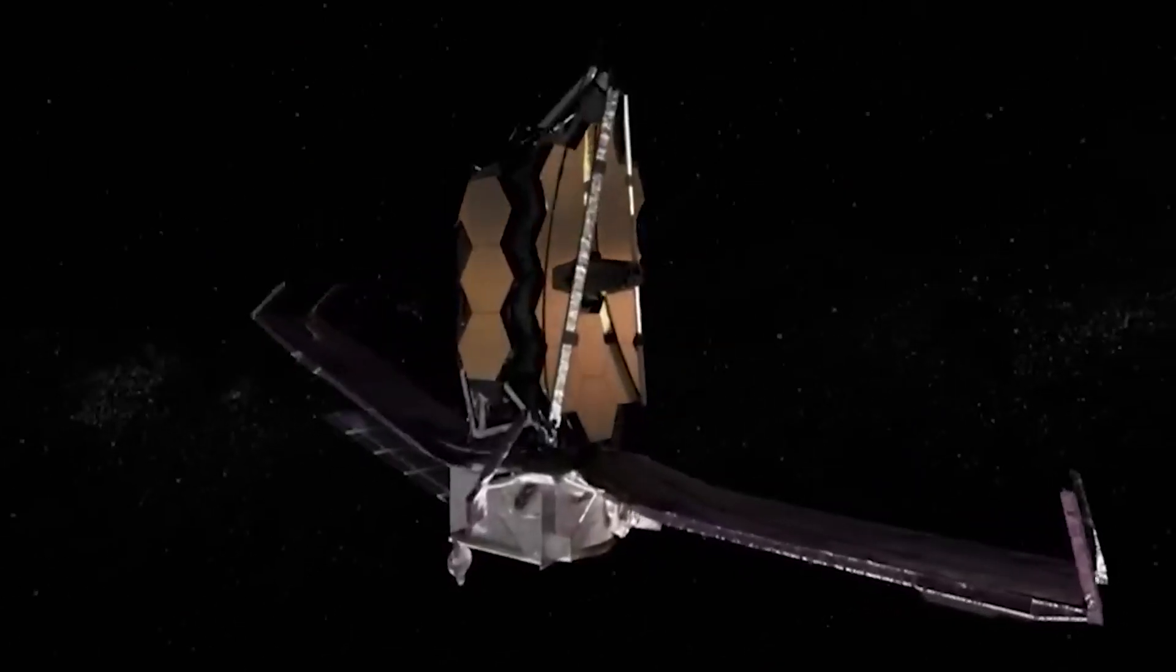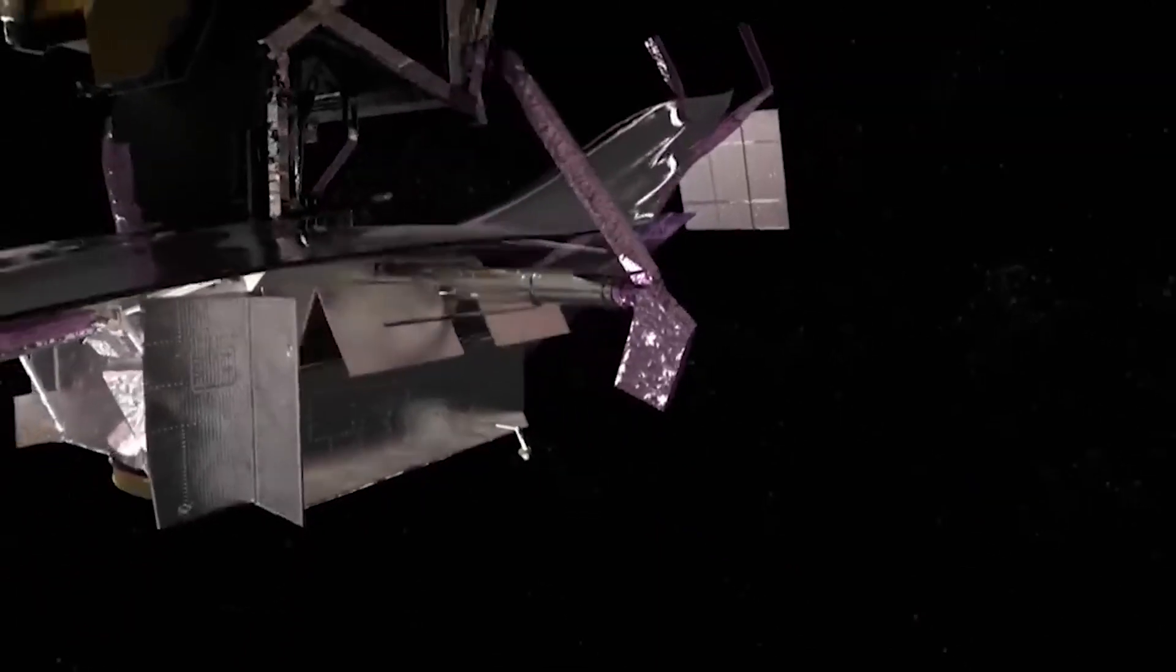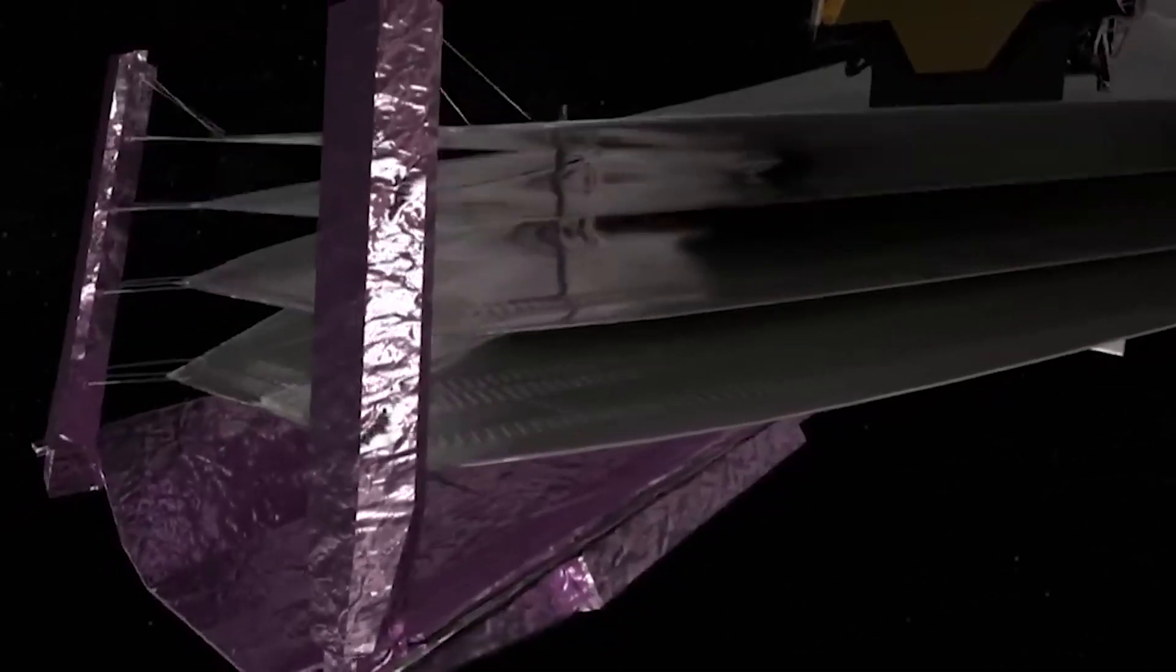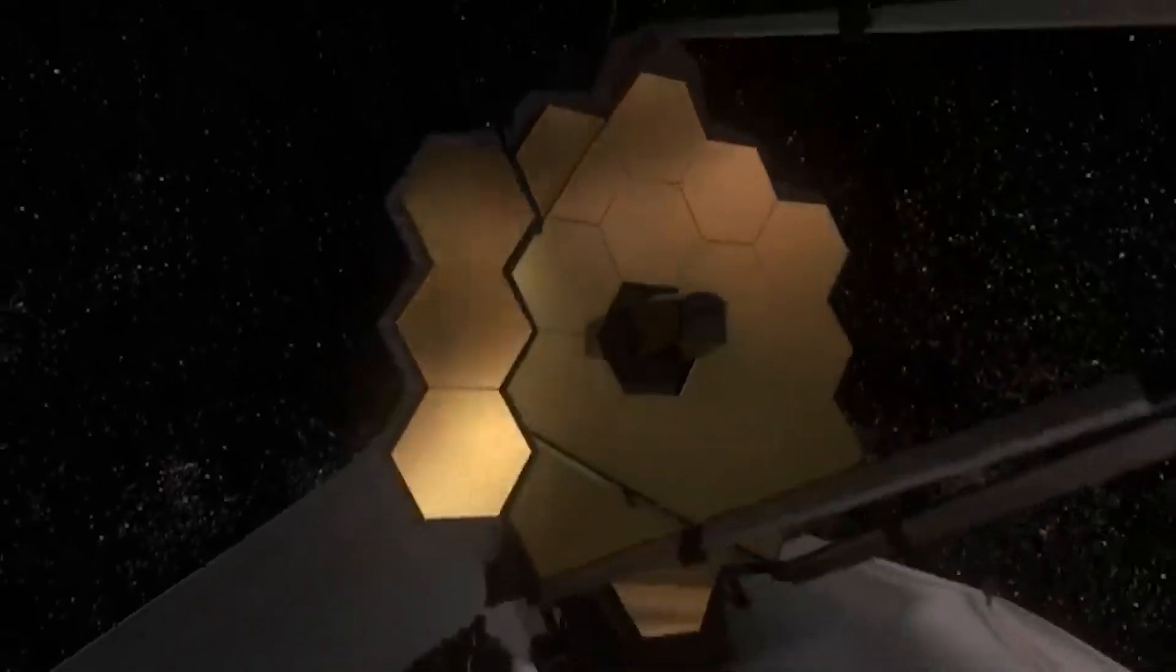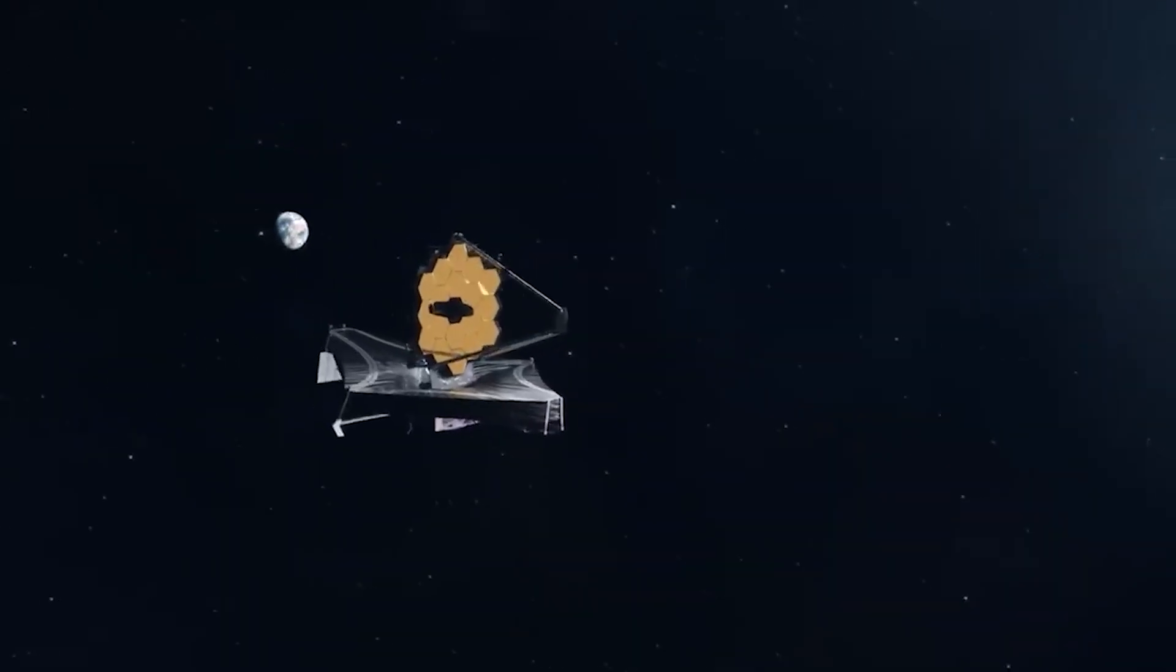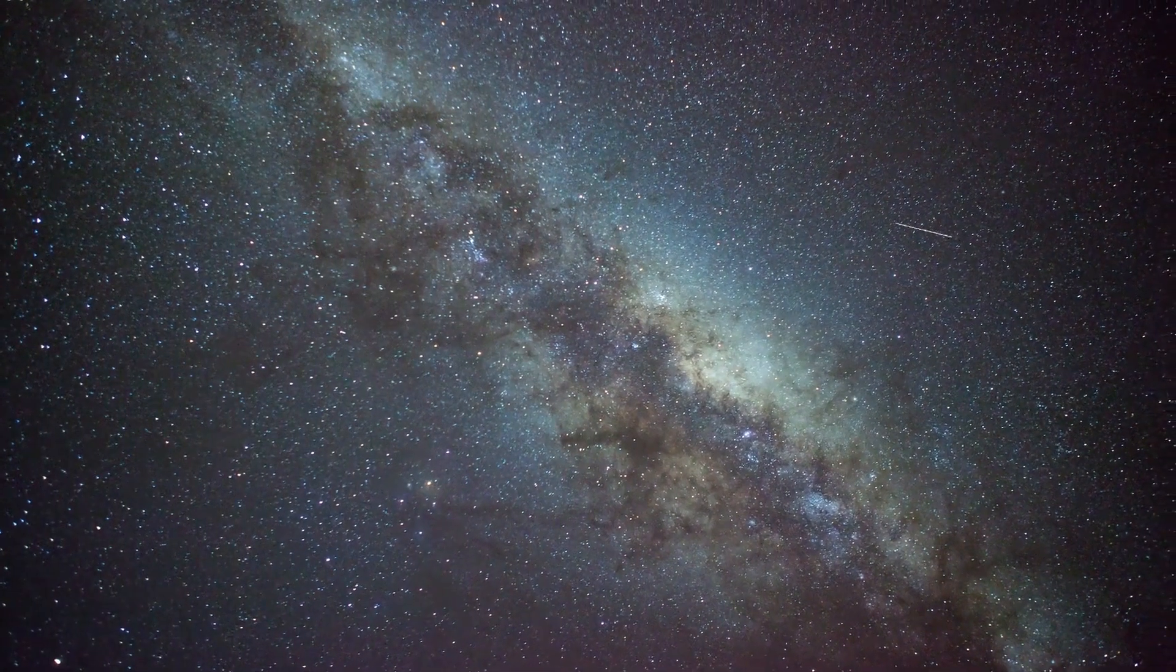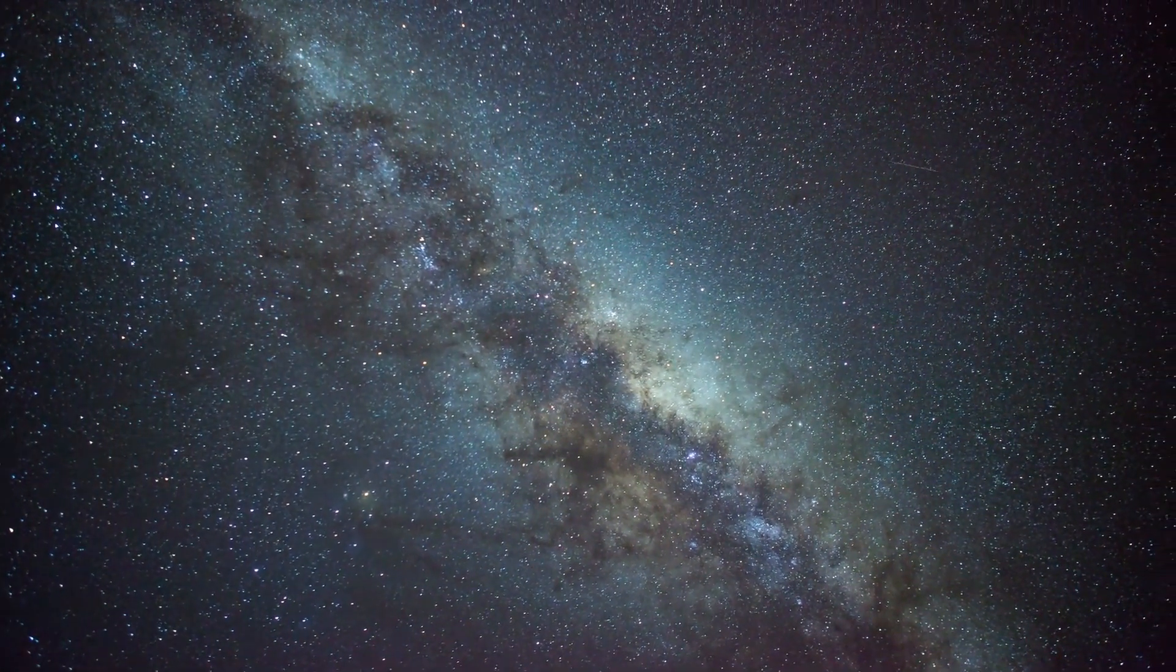The James Webb Telescope is looking for aliens, dark matter, supermassive black holes, and the beginning of the universe at the same time. This is the wonder of James Webb. But how does the telescope capture light emitted so long ago?